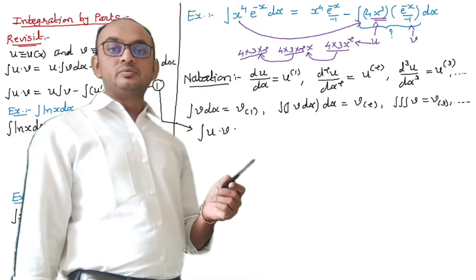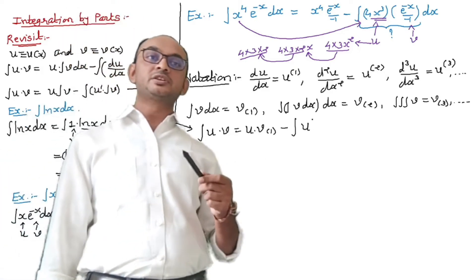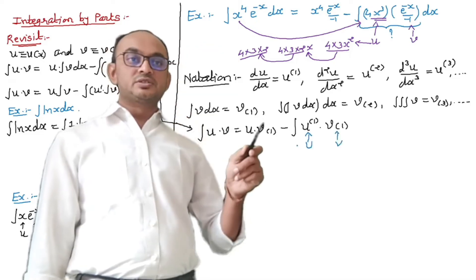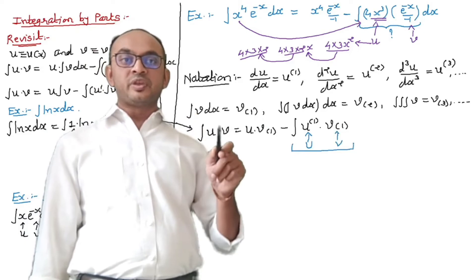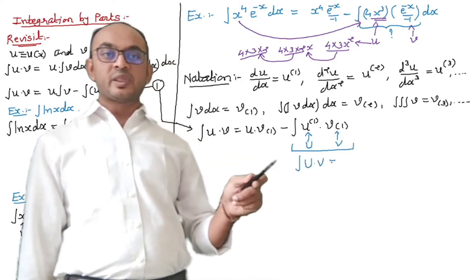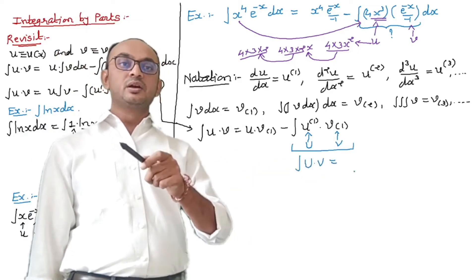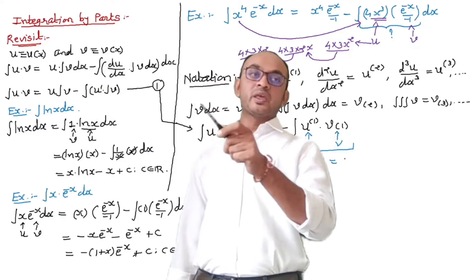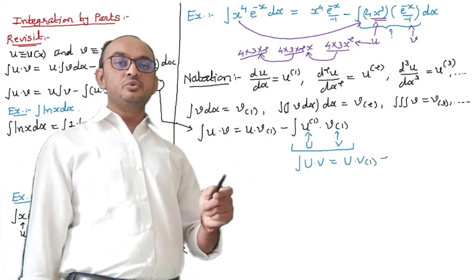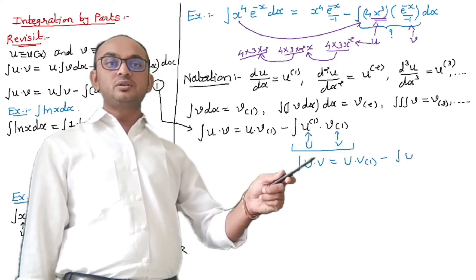Calling this equation 1, we rewrite: ∫uv = u·v₁ − ∫u₁·v₁. Now define new functions: capital U = u₁ and capital V = v₁ (the integration of v). When we need to integrate capital U times capital V, we apply equation 1 again, giving: ∫uv = u·v₁ − ∫u₁·v₁.